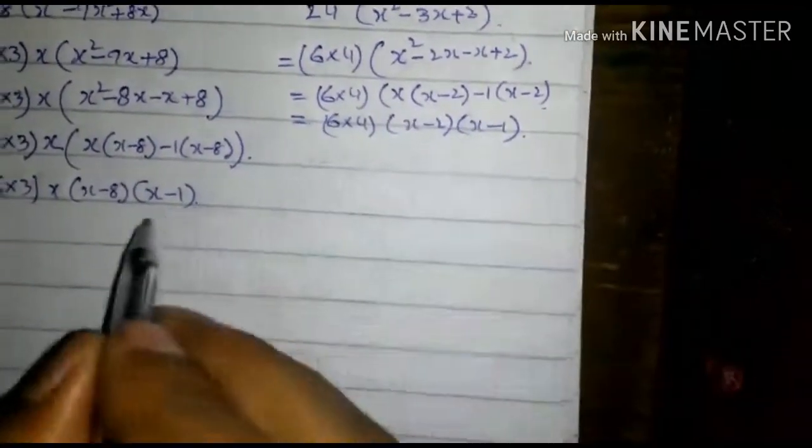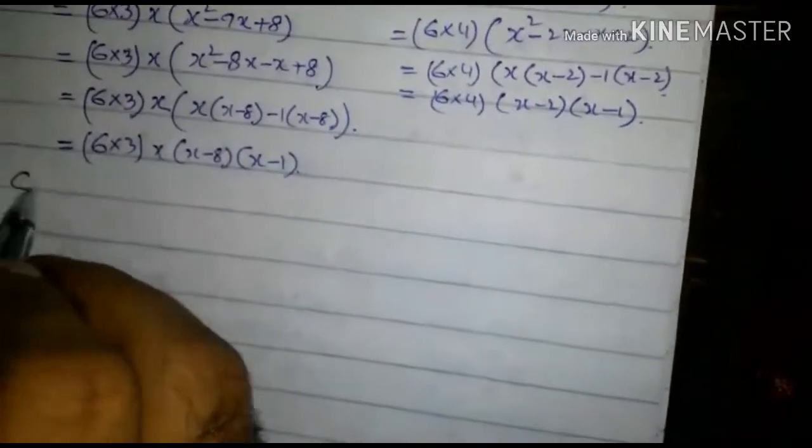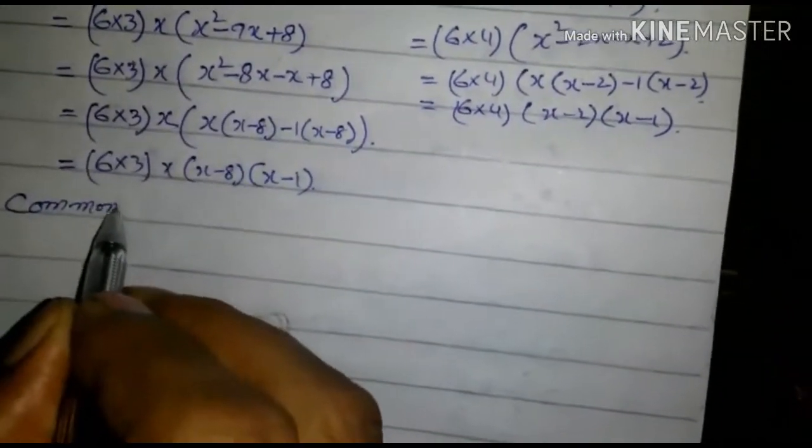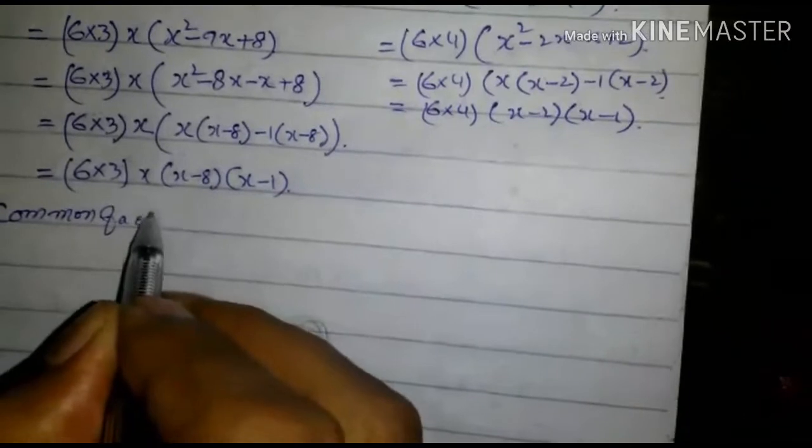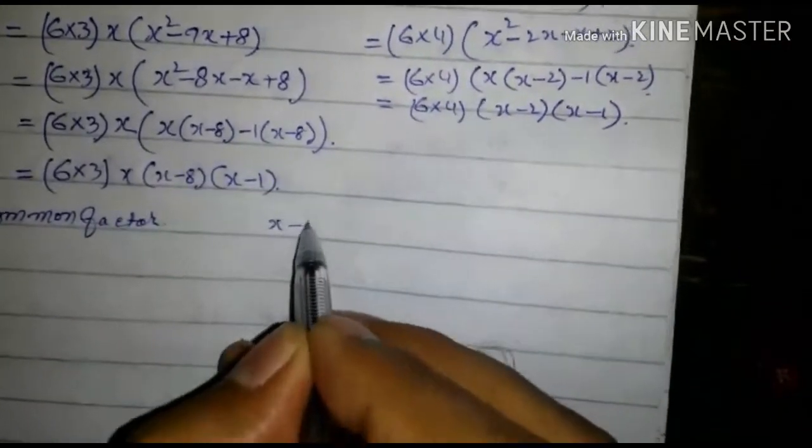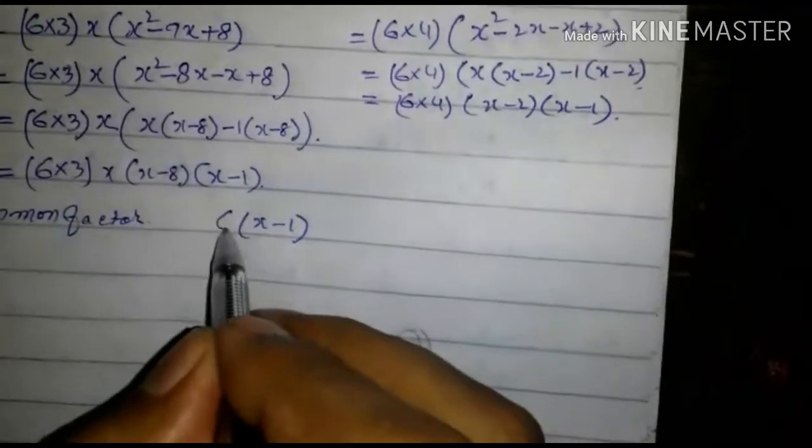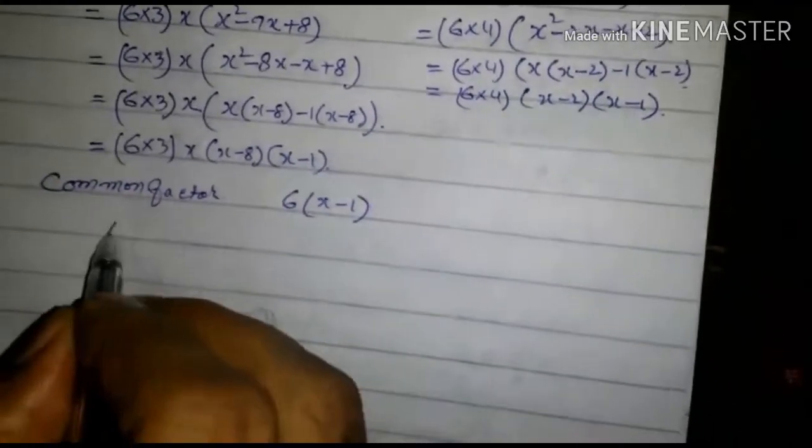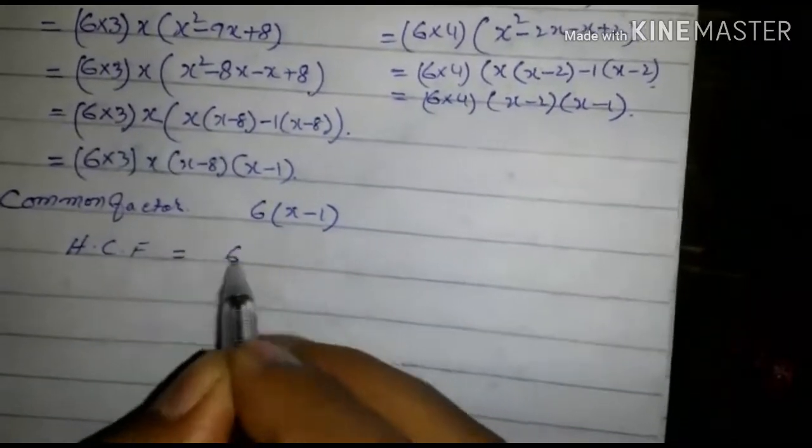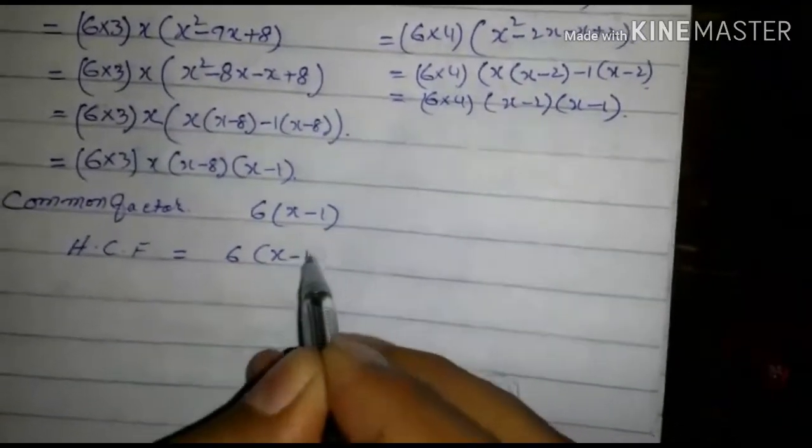(x - 1) is common in both expressions. The common factors are (x - 1) and 6. So the HCF is 6(x - 1).